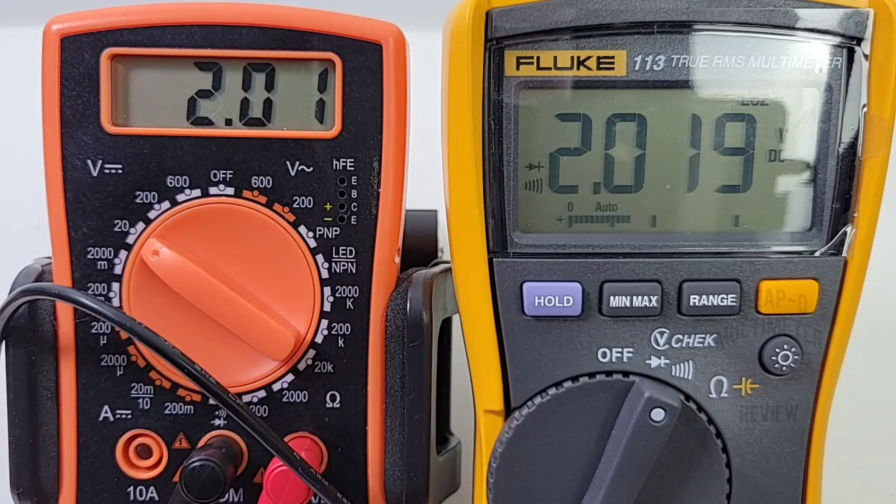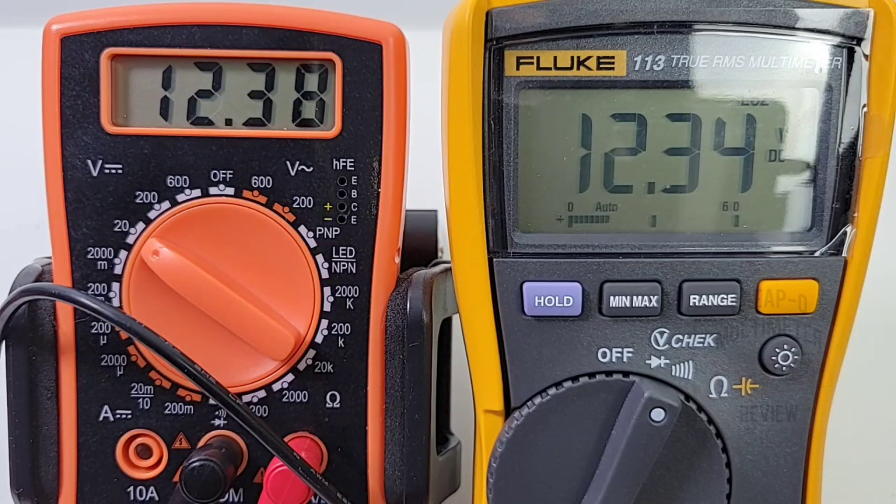Up up and away! 12.31 volts according to the Siglent power supply. 12.38 for the Rushoi, 12.34 for Mr. Fluke.